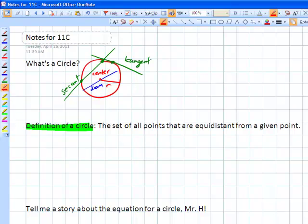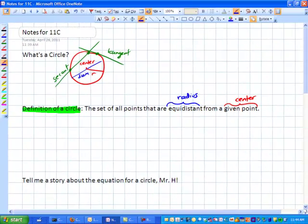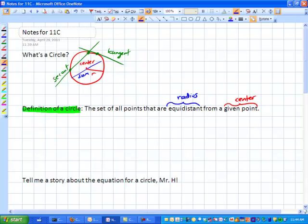it is the set of all points that are equidistant from a given fixed point. Now I'm hoping that you recognize a few of these words. From the given point, that would be the center. And the equidistant, this part right here, that must be the radius. Because really, all a circle is, is a collection of points that are exactly the same distance away from this fixed center point.